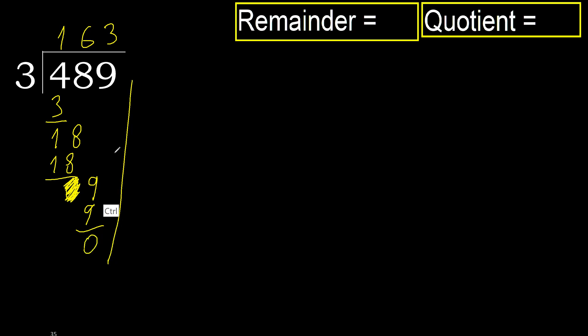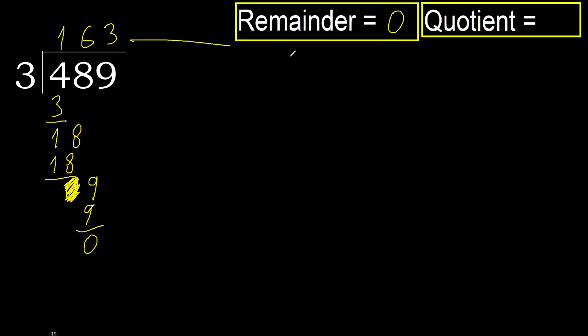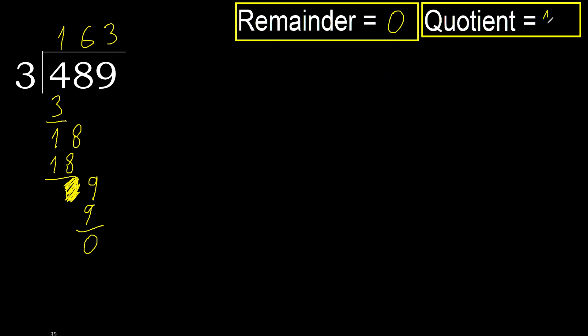Next — that is not a number, therefore finish it. 489 divided by 3 is 163.